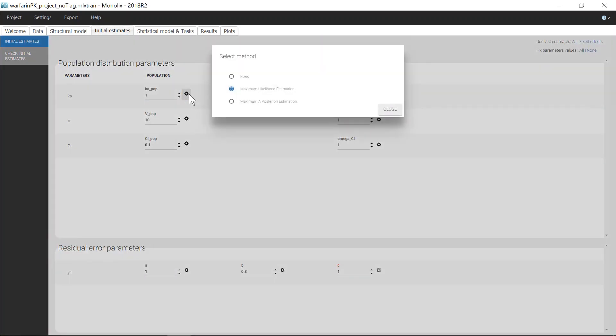If I click here, I see that the default estimation method is maximum likelihood estimation. In that case, Ka-pop is estimated based on the data only.